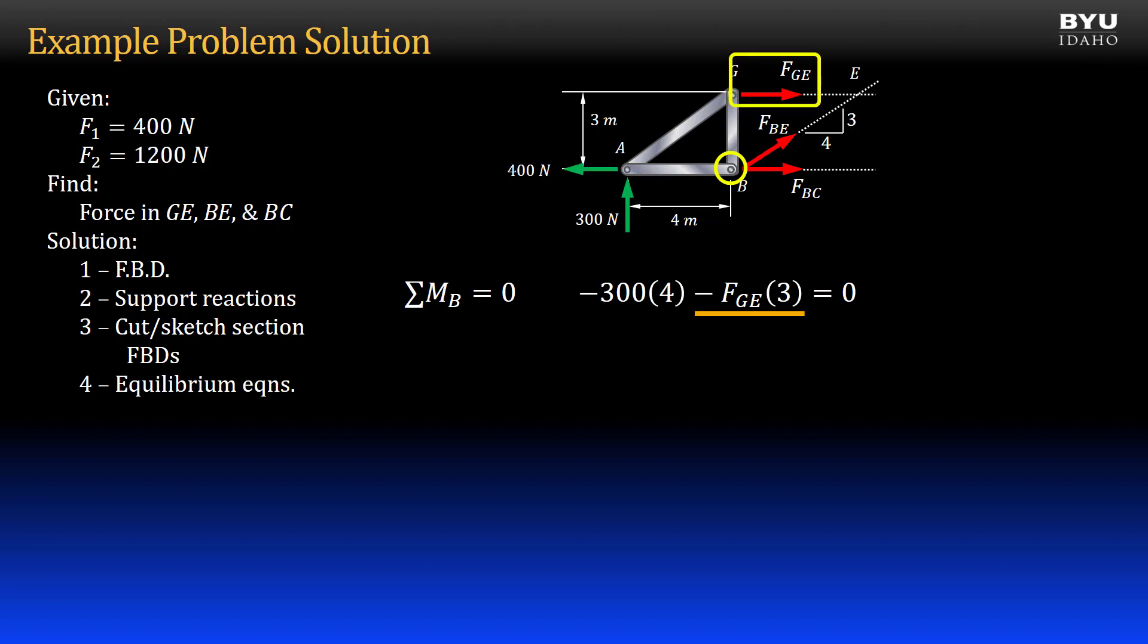I also have force GE times its moment arm, 3 meters, in the negative direction, all equal to zero. Solving for force GE, I get negative 400 newtons. So member GE is in compression.